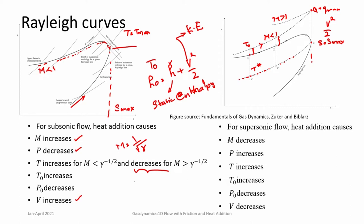You have to view this as a combination: H₀ is increasing all the time when you add heat, but it is a combination of static enthalpy and kinetic energy. T₀ or stagnation enthalpy increases. P₀ actually decreases — because entropy changes, you have to work out the equations here. In the case of supersonic flow, when you add heat: the addition of heat causes Mach number to decrease, so velocity actually decreases, pressure increases, temperature increases, T₀ of course increases, and P₀ also decreases. This is evident from the Rayleigh curves.